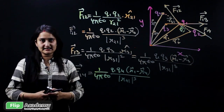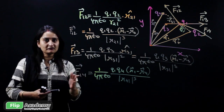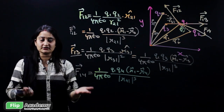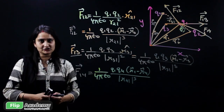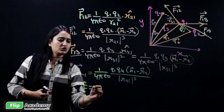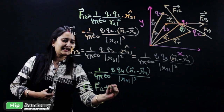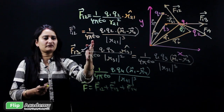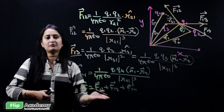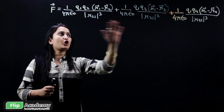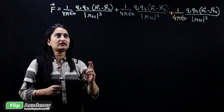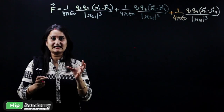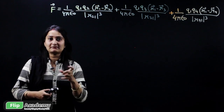The resultant of all these forces is found by the principle of superposition. We are dealing with three forces, so the total resultant equals F12 plus F13 plus F14. Substituting all the values and adding them together produces a very large equation. To simplify it into a precise form, we will use a summation sign.